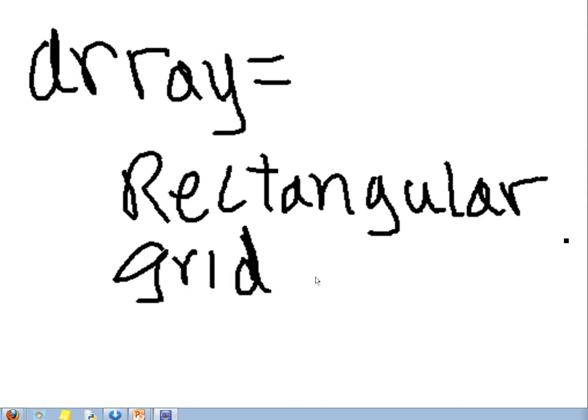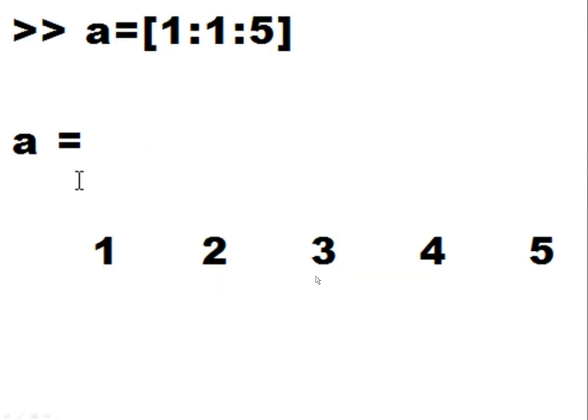An array is a rectangular grid. So here we say a is equal to, starting at 1, increment each value by 1, each element by 1, till you get to 5.